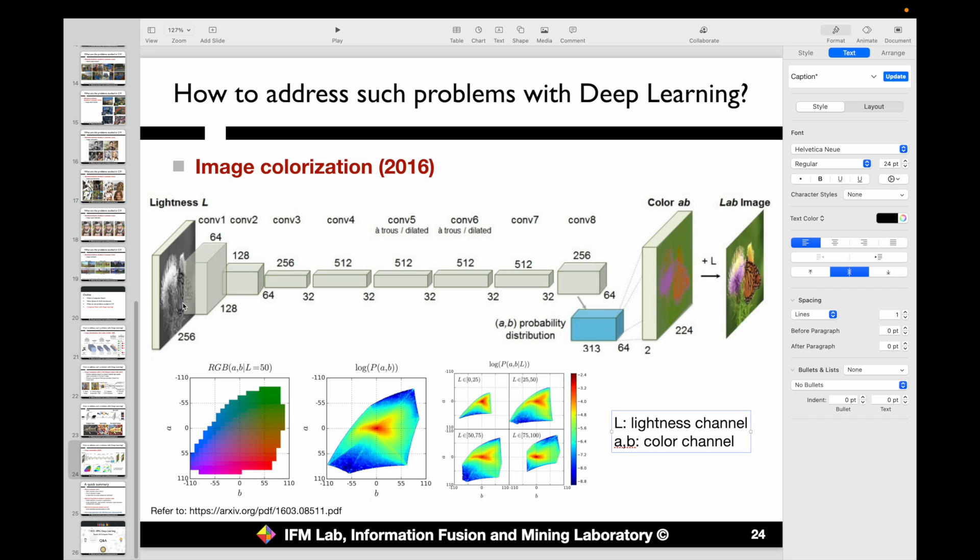Based on this grayscale image, we can learn its representation via several convolutional layers. We can further combine this learned feature representation together with some potential colors for each pixel inside the image to reconstruct the colored image.